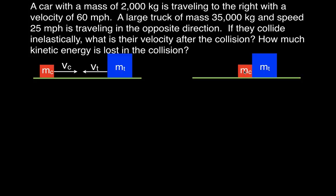Since the cars collide inelastically, we'll assume it's a perfectly inelastic collision. That means momentum is conserved but kinetic energy is not. To solve for the final velocity of the two objects after the collision, we'll use conservation of momentum — summing up the masses and velocities before the collision, setting that equal to the momentum after, and solving for the final velocity.